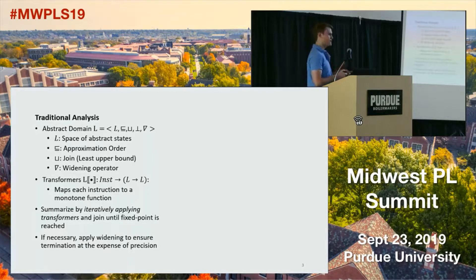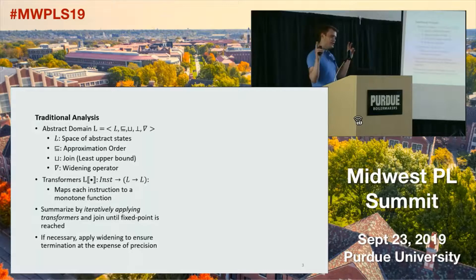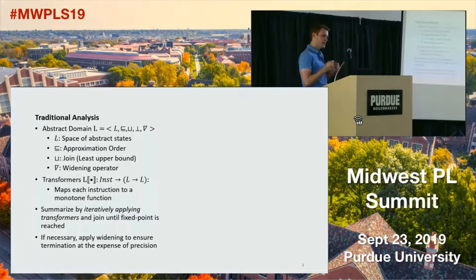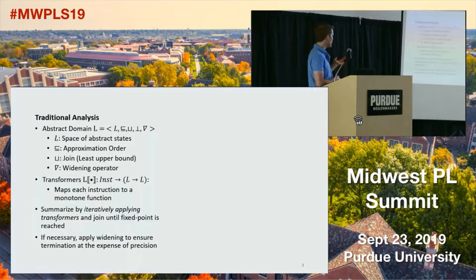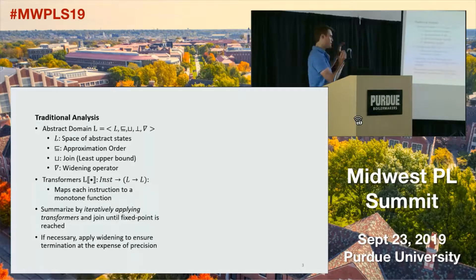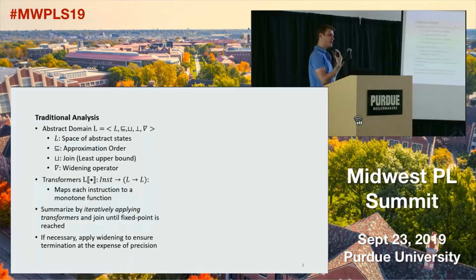A common issue with interesting abstract domains is they don't satisfy the ascending chain condition — meaning this naive iteration algorithm may not terminate; you can keep climbing forever and never reach a fixed point. Because of that, many abstract domains include widening operators, which take coarser jumps in abstraction to guarantee reaching a fixed point. However, this sacrifices precision for termination. We find this framework brittle and unpredictable — widening operators behave like heuristics.